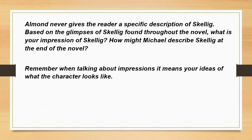Almond, who's the author, never gives the reader a specific description of Skellig. Based on the glimpses of Skellig found throughout the novel, what is your impression of Skellig? How might Michael describe Skellig at the end of the novel? If I was to say what Skellig looks like based on reading the story, I would say he was a man with pale skin — very dry and chalky — very tall and slim, maybe with matted hair, quite dirty, and he had wings. He wasn't completely old; in one part it said he was younger than expected, but perhaps suffering made him look older.